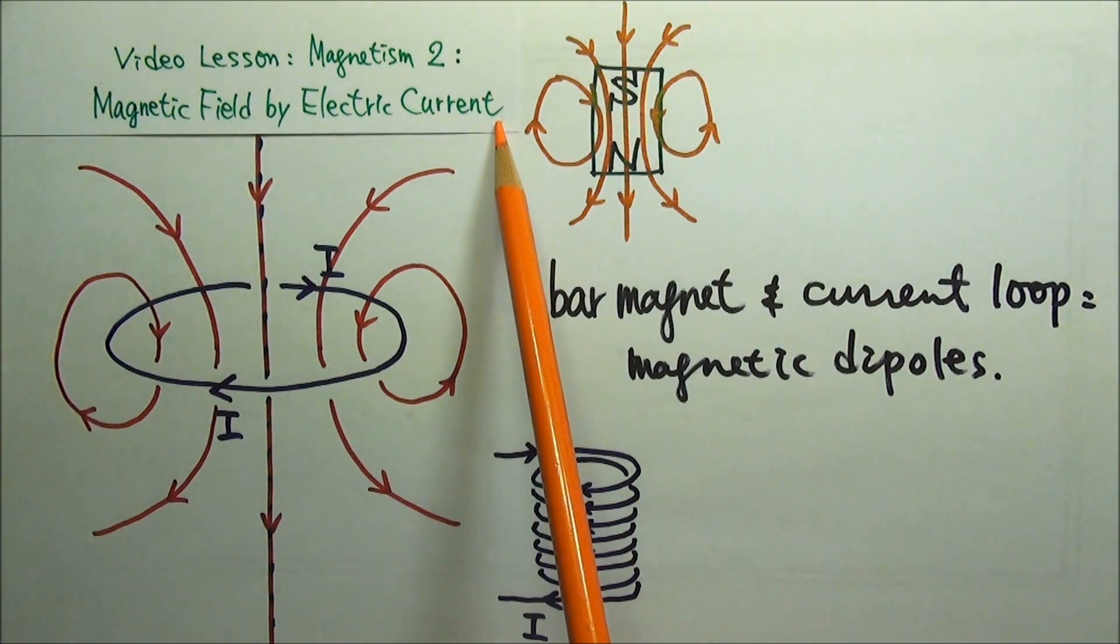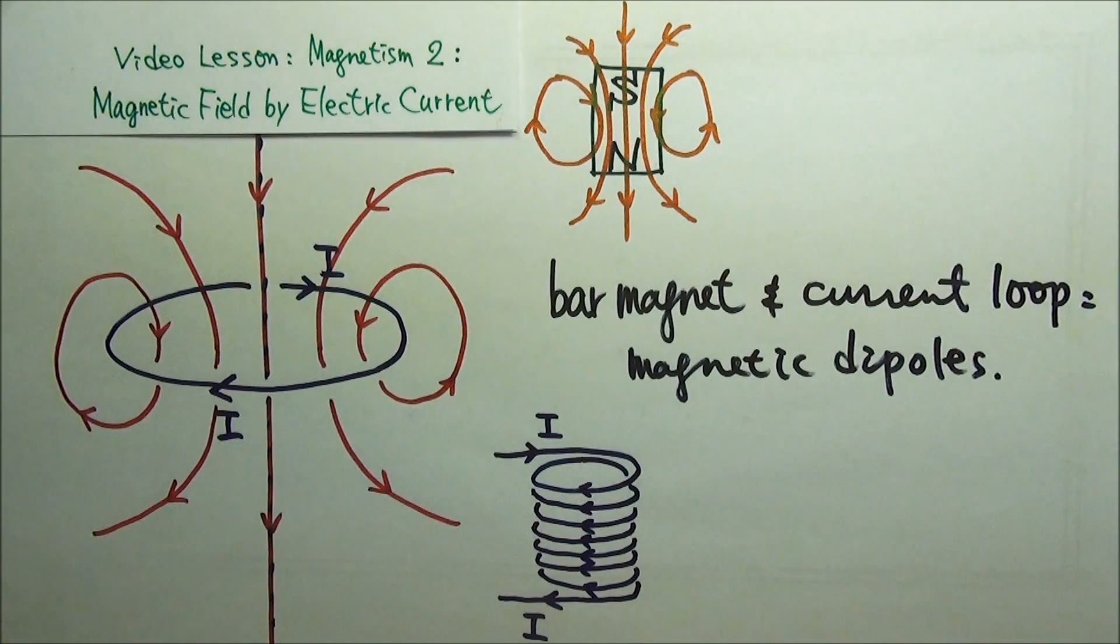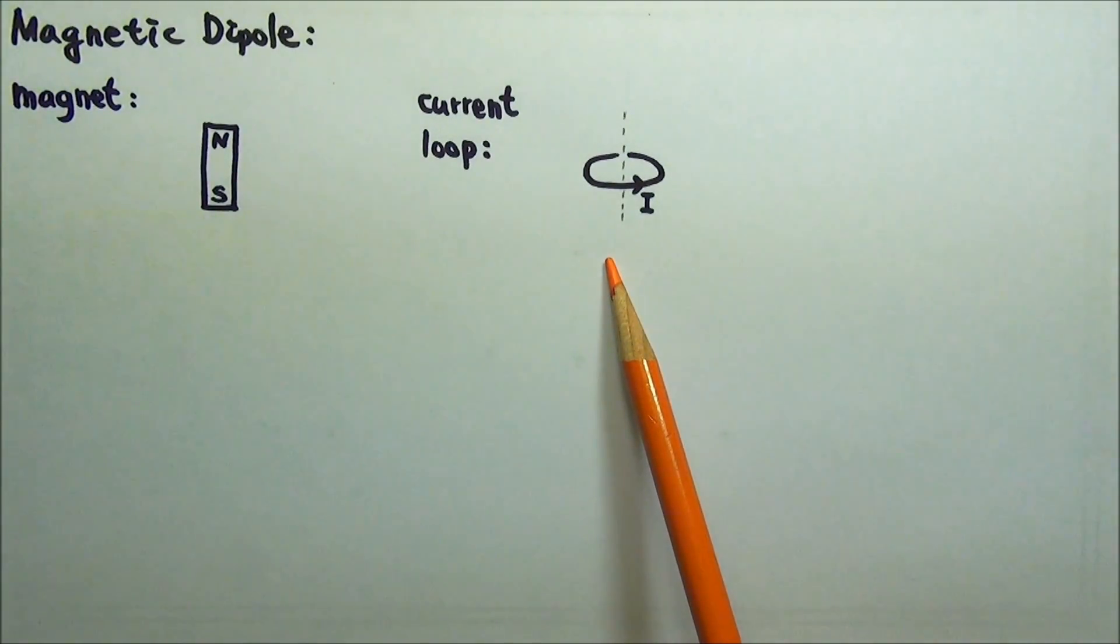In the second magnetism video lesson, we discussed the two kinds of magnetic dipoles: magnet and electric current loop.